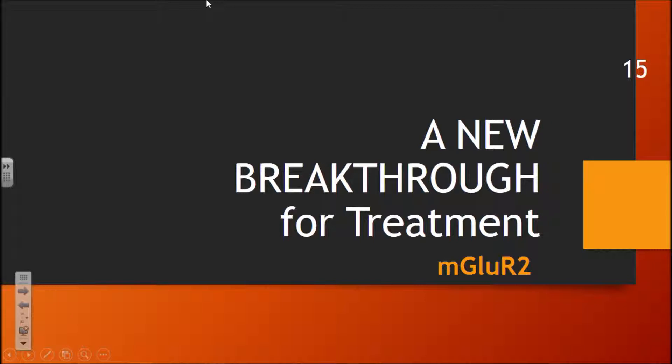Once the rabies virus enters the central nervous system, treatment becomes extremely difficult. The rabies virus has a very low molecular weight and can easily cross the blood-brain barrier. However, our current treatment methods use neutralizing antibodies, which are so large — several kilodaltons — that they cannot pass the blood-brain barrier. Therefore, those treatments cannot neutralize the virus once it has crossed into the CNS. Treatment of rabies is very time-dependent and must occur before it crosses the central nervous system.